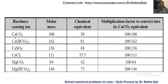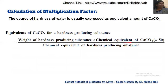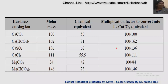Let us consider another example: calcium bicarbonate, Ca(HCO₃)₂. Calcium = 40. For HCO₃⁻: H=1, C=12, O=16×3=48, total = 61. Two HCO₃⁻ groups: 61×2 + 40 = 162 (molecular weight). Since valency is 2, equivalent weight = 162/2 = 81. Multiplication factor = 50/81 (equivalent weight of CaCO₃ ÷ equivalent weight of substance), or equivalently 100/162.